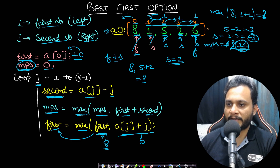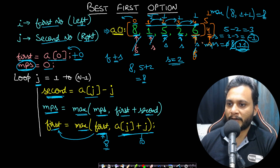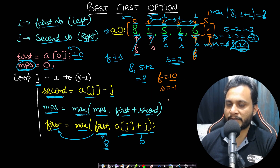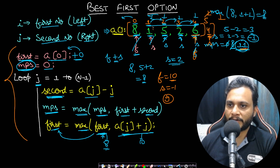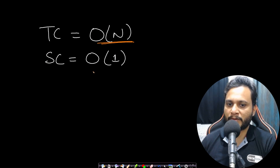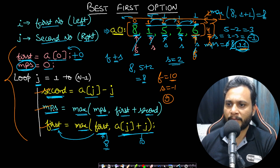We continue until the iterator goes out of bounds. In this algorithm we traverse the array exactly once from left to right, updating 'first', 'second', and 'maxPairSum' in constant time at each step. Therefore, time complexity is O(n) and space complexity is O(1), using only two extra variables.